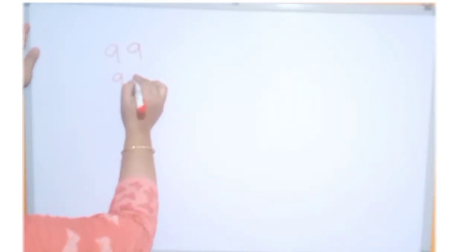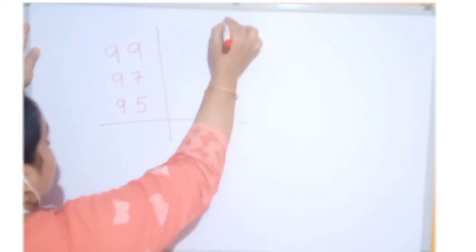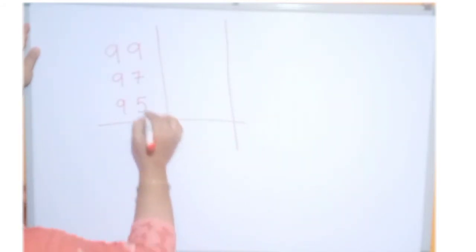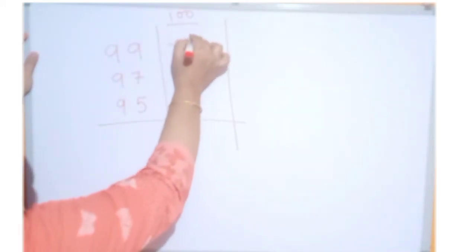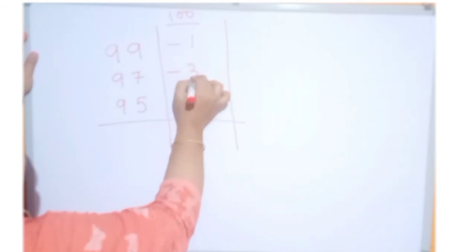98, 97 and 95. Correct? Now, this time we are taking base of 100. Now, this is lesser than base. How much less? 1, 3 and 5.